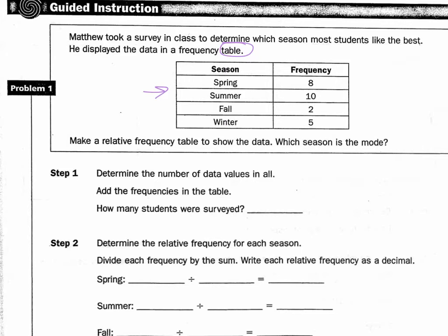My keyword for that one is most. So step one, this is going to break down the steps and how to do this. Determine the number of data values in all. That's our total. If I were to add up the spring, summer, winter, fall, I would get that there's a total of 25 students surveyed.